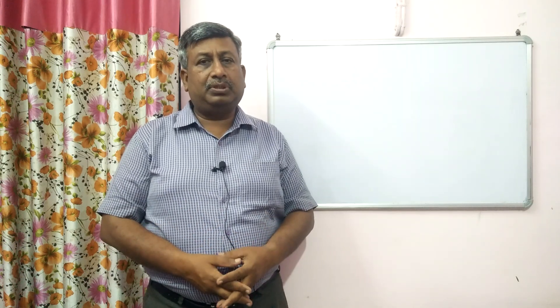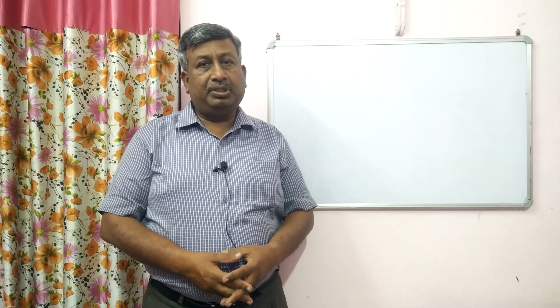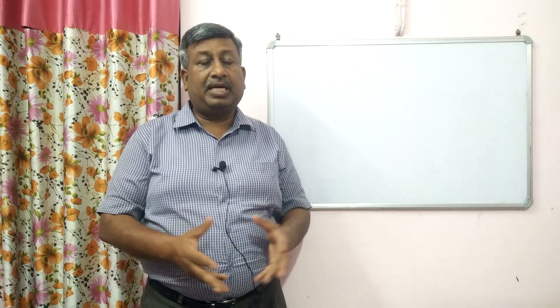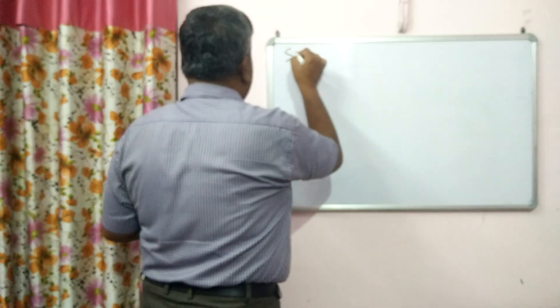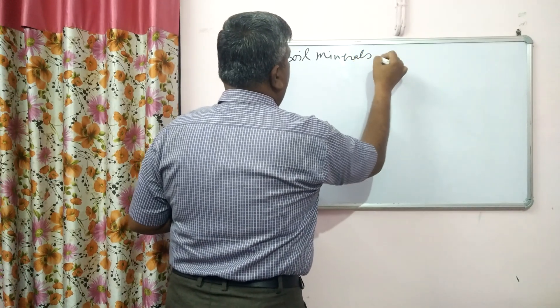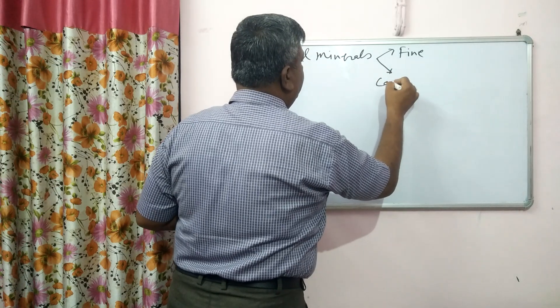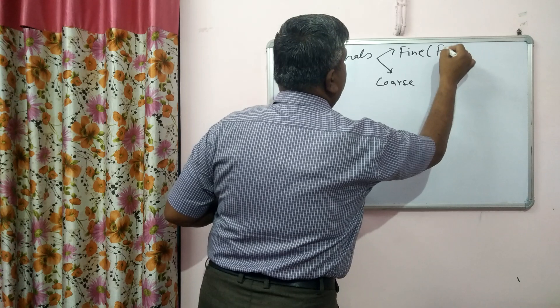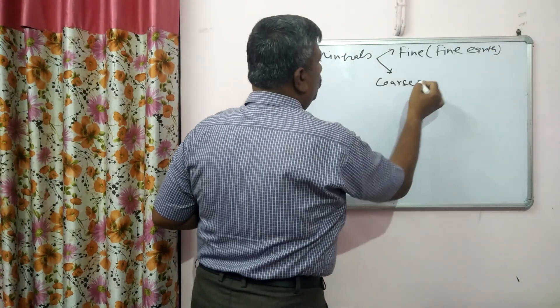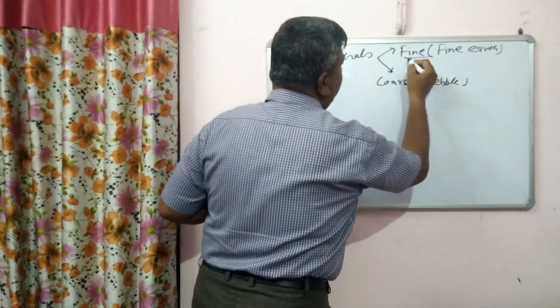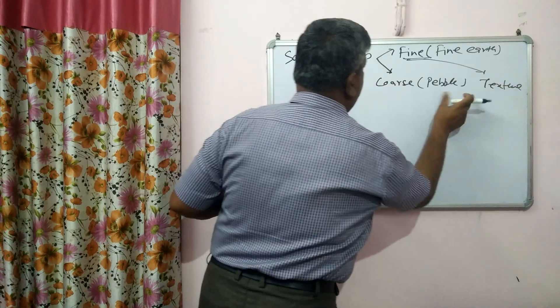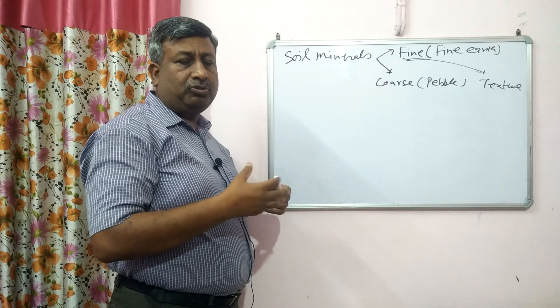This type of question is generally asked in examinations. Classification is very important because it is based on size, and the size of minerals affects many properties of soil, particularly physical properties. So soil texture is very important, which is comprised of fine particles — that is sand, silt and clay. Soil minerals can be divided into two parts: fine particles and coarse particles. Fine particles are known as fine earth or soil separates, and coarse particles are also known as pebble, or stone, etc. Fine particles make the texture, so in general we do not include coarse particles in soil texture.